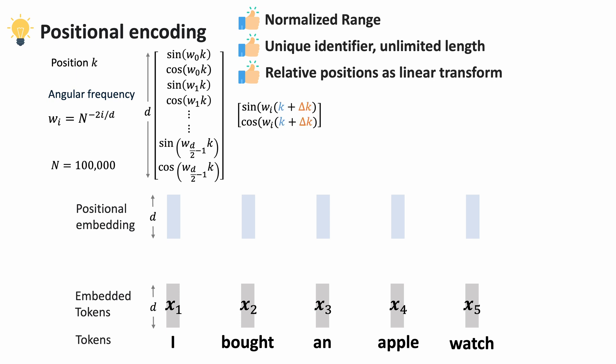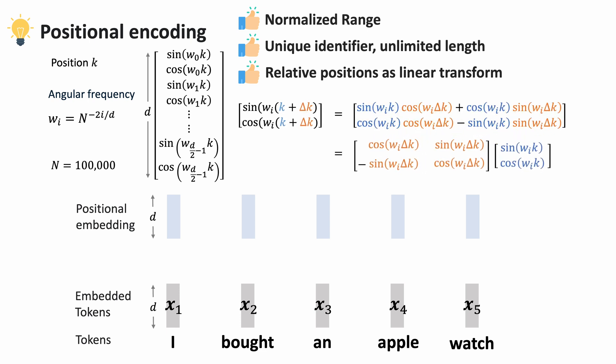We can express the position k plus delta k as a linear transform of the encoding for the position k.